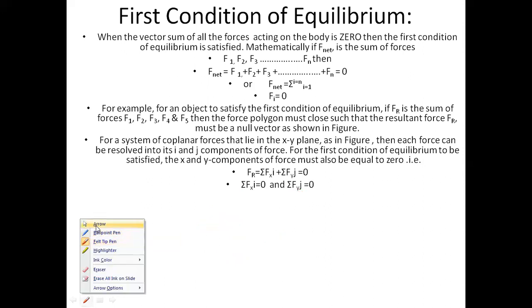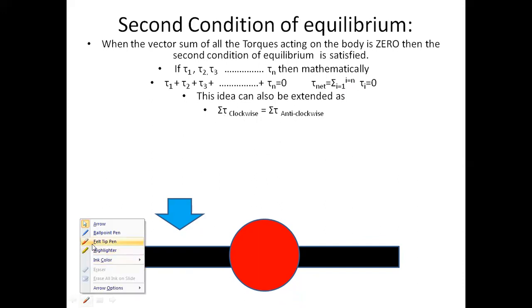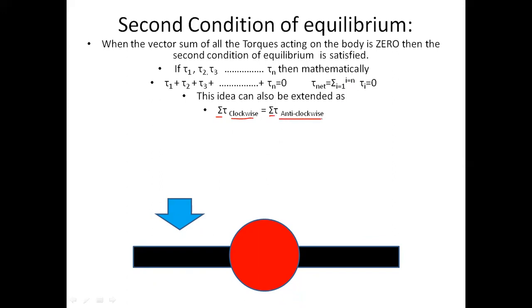Now let's move on to the second condition of equilibrium. If we have a bar and want to rotate or turn it, the vector sum of all torques acting on the body must be zero. Mathematically, torque1 plus torque2 plus torque3 and so on up to torque_n equals zero. The sum of all clockwise torques must equal the sum of all anticlockwise torques.